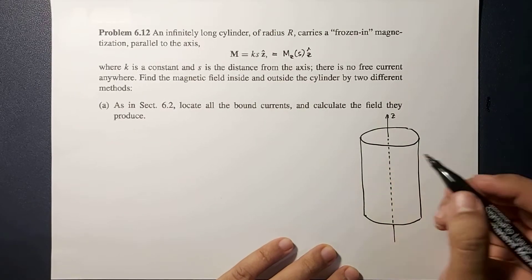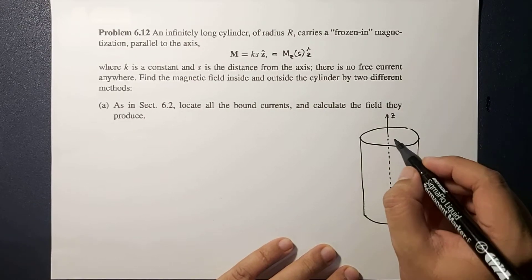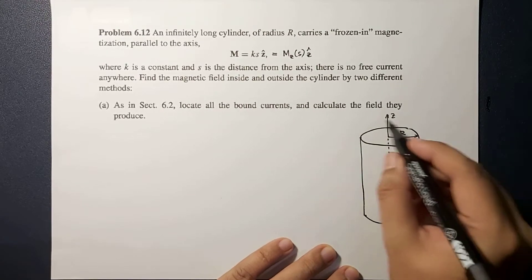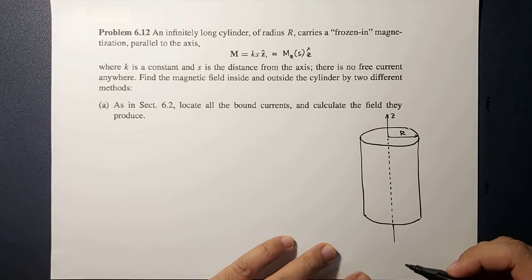And then this is R, the radius of your infinitely long cylinder.